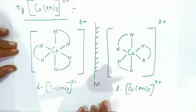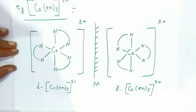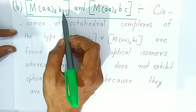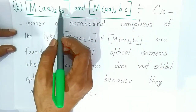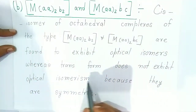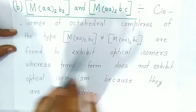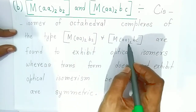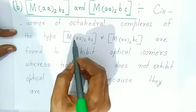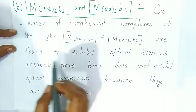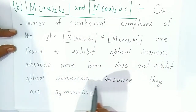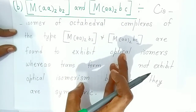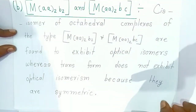The second type of octahedral complex is M(AA)₂B₂, where AA is a bidentate ligand and B₂ is a monodentate ligand. Only the cis isomers of octahedral complexes of this type exhibit optical isomers. The trans isomers do not rotate plane-polarized light because they are symmetrical. Unsymmetrical cis isomers will rotate light and exhibit optical isomers, whereas symmetrical complexes will not.